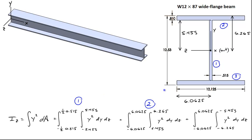I can do something similar for the upper flange. I'm integrating again from the left, negative 6.0625 to the right of the upper flange, and I'm integrating from the bottom of the upper flange to the top. And I'll do something similar for the lower flange.